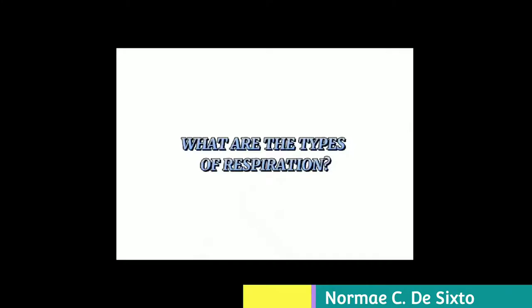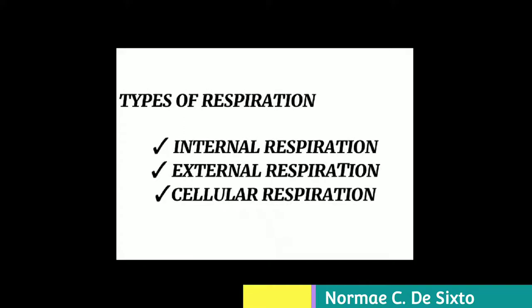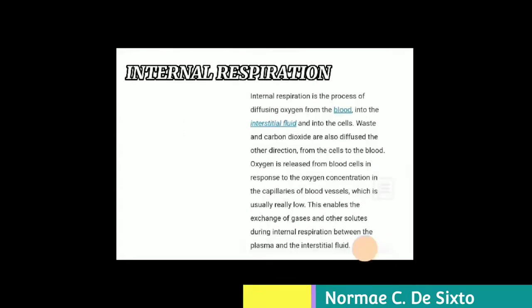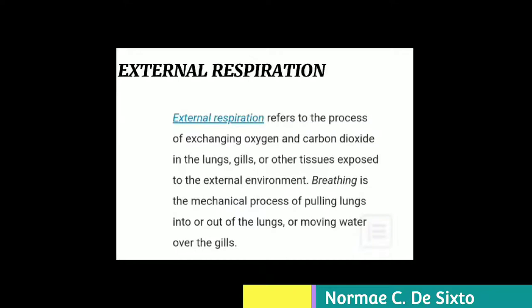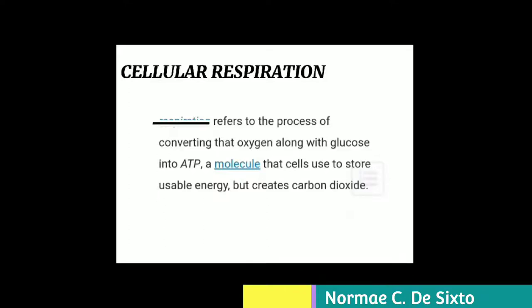The types of respiration are internal, external, and cellular. Internal respiration is the process of diffusing oxygen from the blood into the interstitial fluid and into the cells. External respiration refers to exchanging oxygen and carbon dioxide in the lungs, gills, or other tissues exposed to the external environment. Cellular respiration refers to the process of converting oxygen along with glucose into ATP, a molecule cells use to store usable energy, but it creates carbon dioxide as a byproduct.